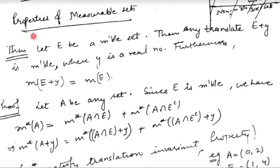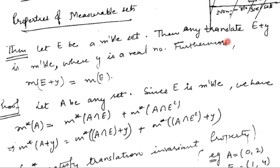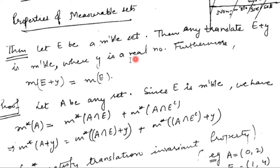Good morning everyone. Today I'm going to explain the properties of measurable sets. Let E be a measurable set. We want to prove that any translate E plus y is also a measurable set, where y is any real number. Furthermore, the measure of E plus y is the same as the measure of E.